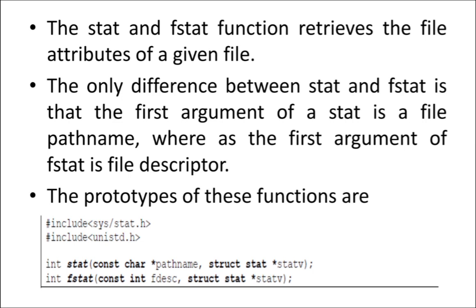You can see the prototypes on screen. In the STAT function, the first argument is a pathname, and the second argument is a stat structure — I will explain that in the next slide. For FSTAT, the first argument is a file descriptor. The stat structure variable is the second argument in both STAT and FSTAT prototypes.